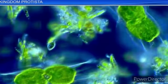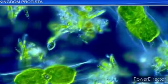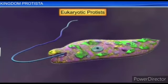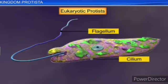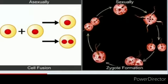Members of Protista are aquatic — they are present in water. The kingdom forms a connecting link with plants, animals, and fungi, showing characters of all three. Being eukaryotes, the protist cell body contains a well-defined nucleus and other membrane-bound cell organelles. Some have flagella or cilia. Protists reproduce asexually and sexually by cell fusion and zygote formation.